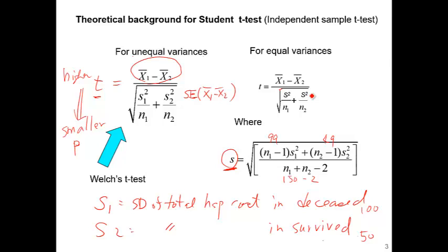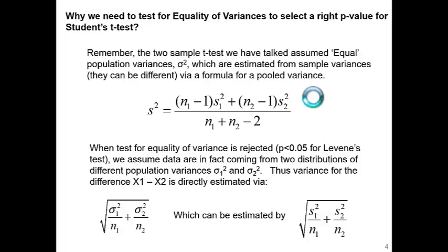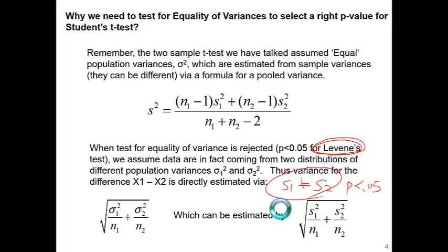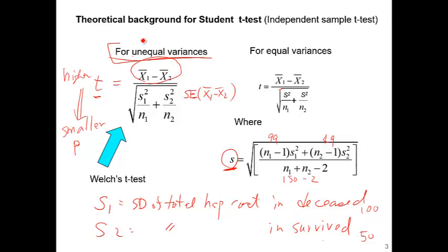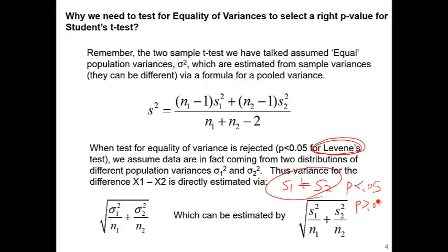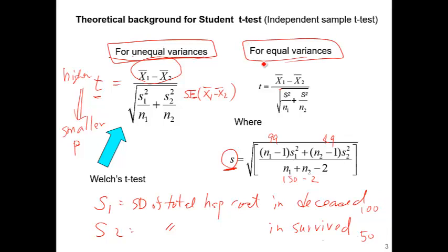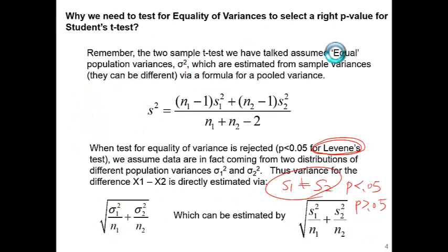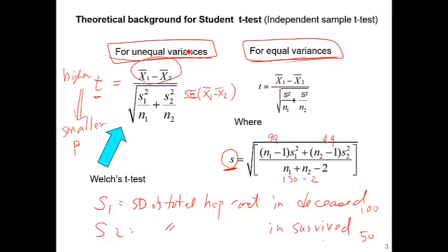That's the difference between the two formulas. In many statistical software packages, when you run a t-test it automatically comes with another test called Levene's test, which compares whether S1 is the same as S2. If Levene's test p-value is less than 0.05, we consider S1 different from S2 and use the t-test for unequal variances. If Levene's test p-value is greater than 0.05, you use the t-test for equal variances. In SAS and SPSS, that's how you decide.